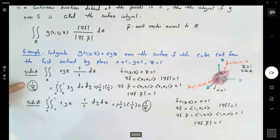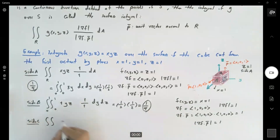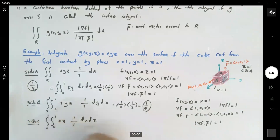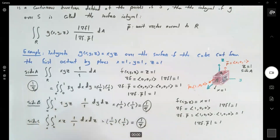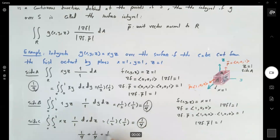With the same argument for side c, which is the plane y equals 1, the double integral becomes x·z·1 times 1 over 1, dx dz, from 0 to 1 and 0 to 1, which is one half times one half, or one fourth. So if you add these together, that's one fourth plus one fourth plus one fourth, which equals three fourths. This is the surface integral.